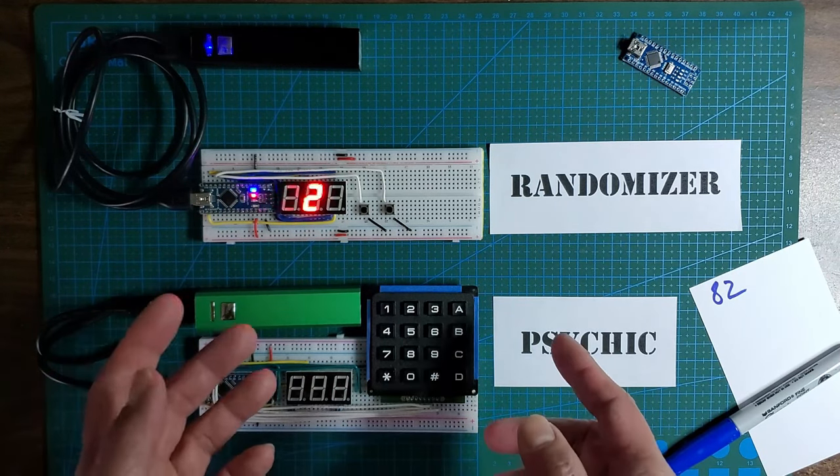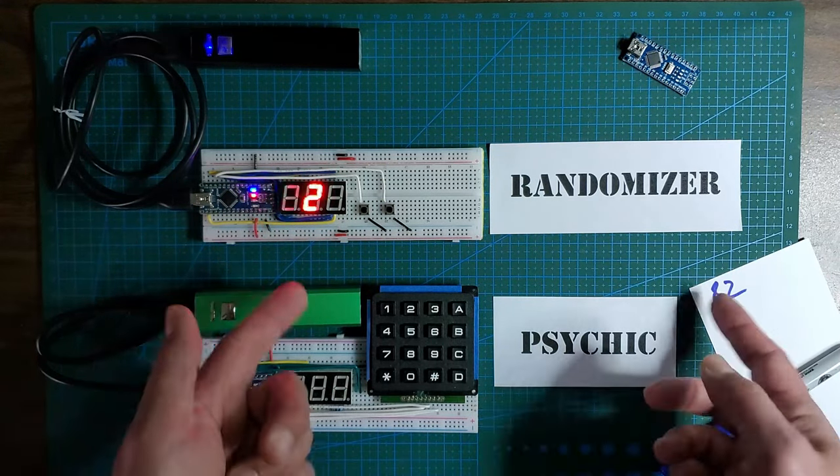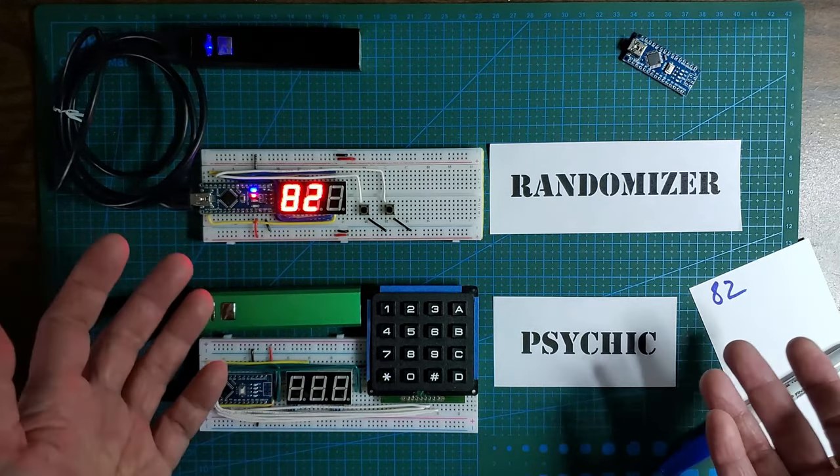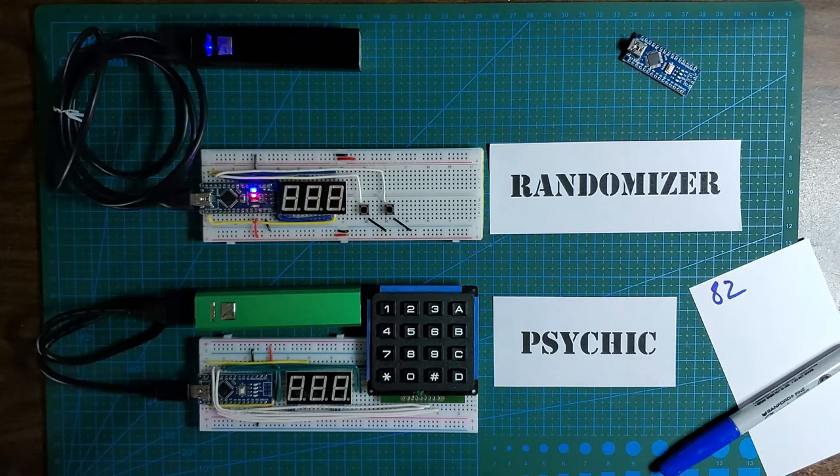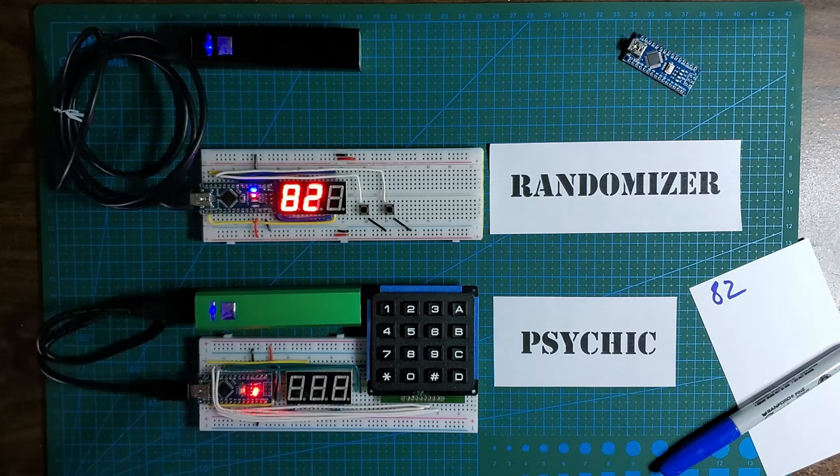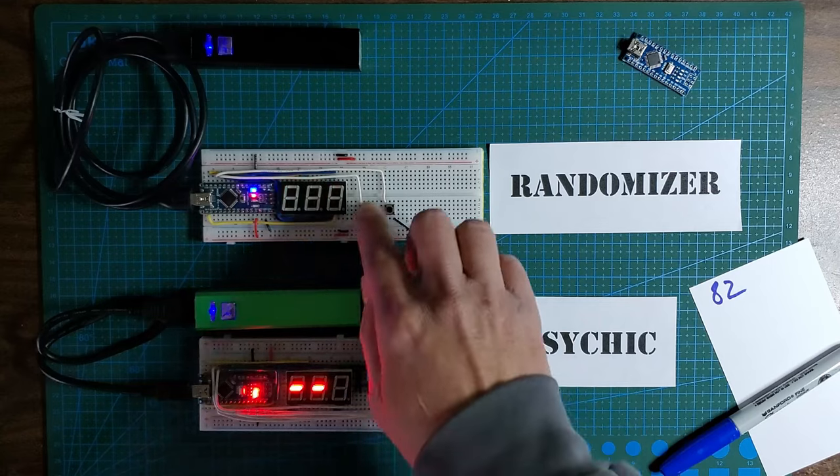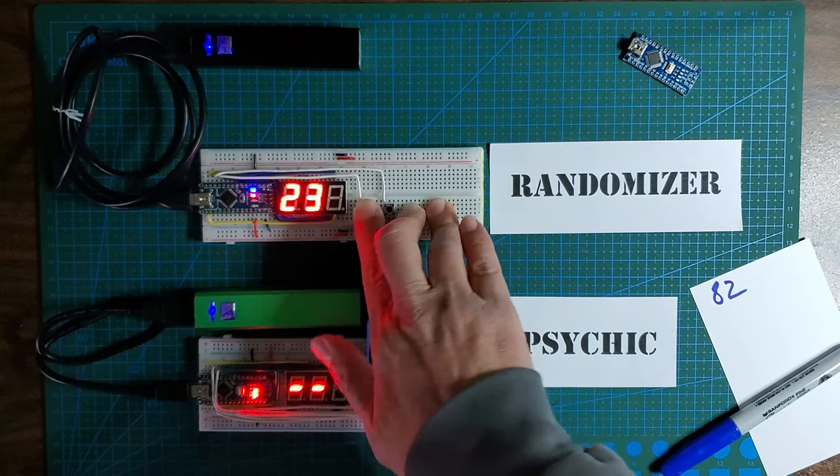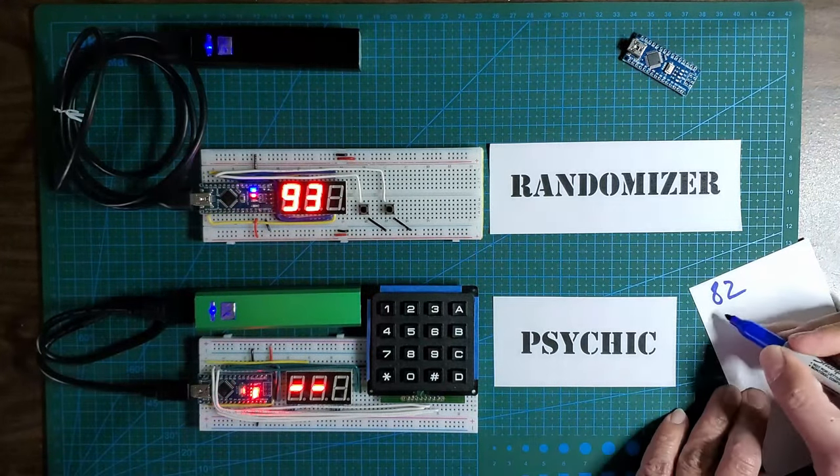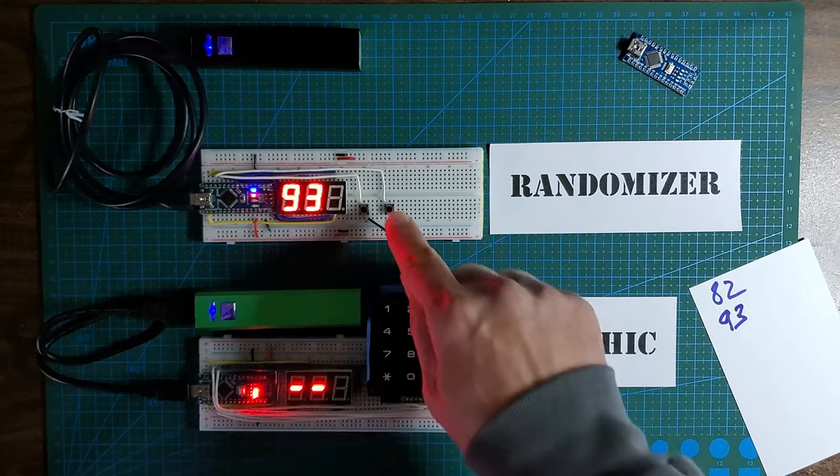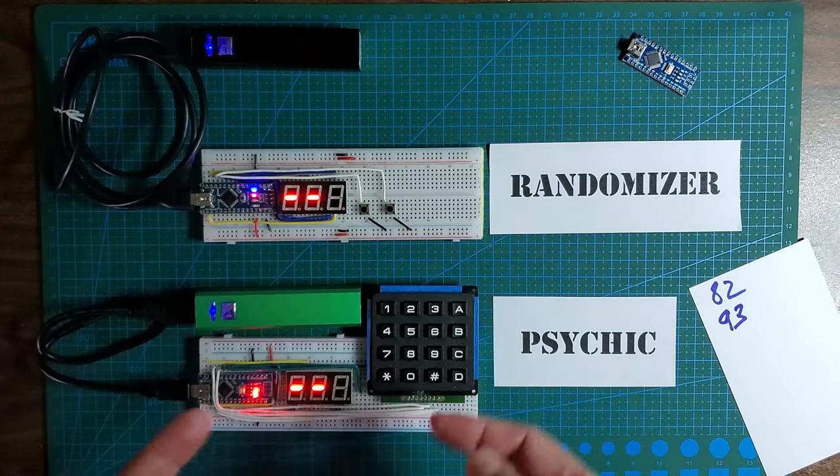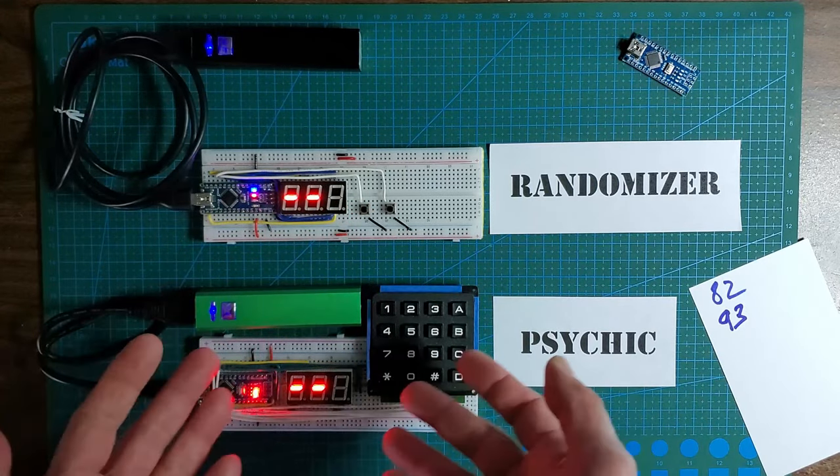Since you guys aren't here to pick a random number and I could see the number I pick, it's pointless for me to perform this magic trick. So let me introduce you to the psychic. Let's power him up and let's pick another random number. I don't know, 93.